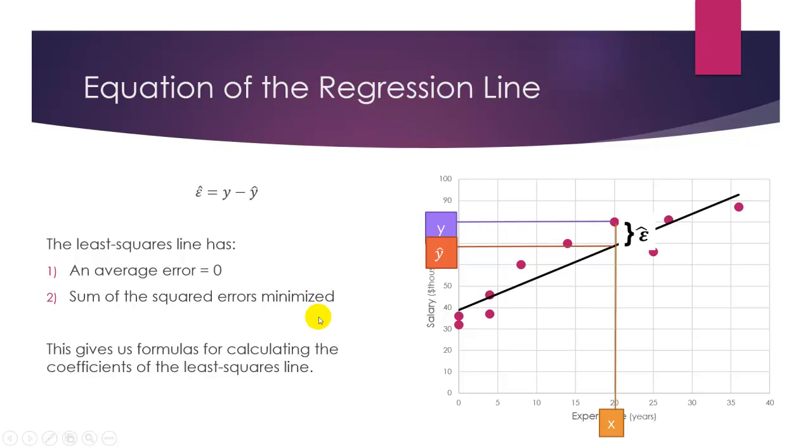So the sum of squares being minimized is where that whole least squares name comes from. The formulas to calculate this by hand really only require algebra or arithmetic, but it's very complicated and takes a very long time. So nobody really would do this by hand, except as an academic exercise.